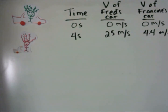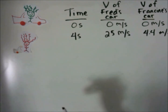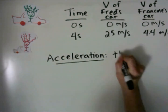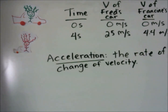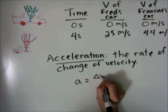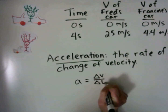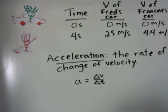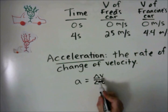To find their acceleration, we need to use the equation for acceleration. First, let's define what acceleration is. Acceleration is the rate of change of velocity. The equation for acceleration is delta V over delta T — remember that delta means change in.